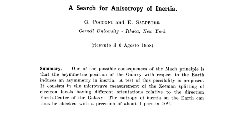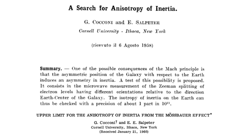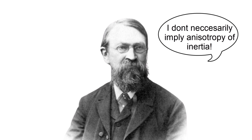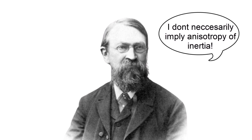The most cited suggestion that Mach's principle may result in anisotropy of inertia came from Cocconi and Salpeter in 1958 and 1960. Although they clearly state in their first abstract that one of the possible consequences of Mach's principle is that the asymmetric position of the galaxy with respect to the Earth induces an asymmetry in inertia, many authors misinterpreted this as implying that Mach's principle necessarily leads to anisotropy of inertia.